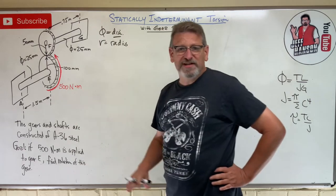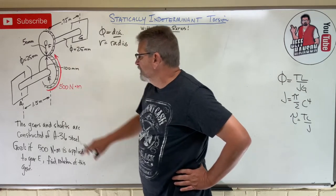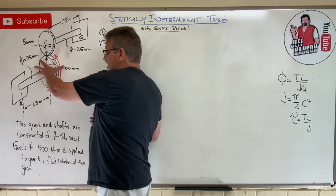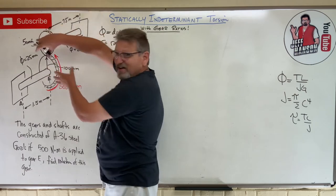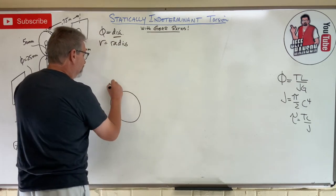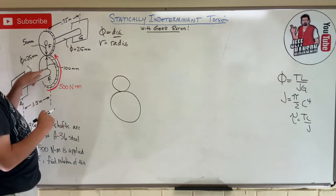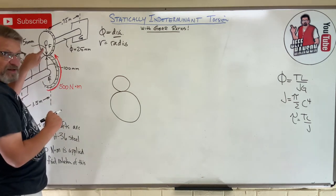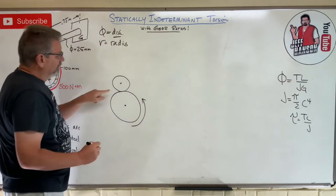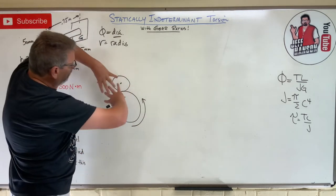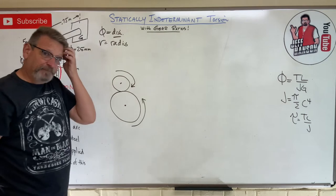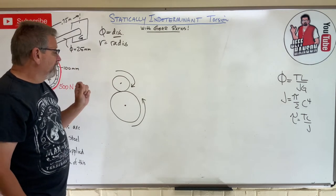Find the rotation of gear E, which is the big one on the bottom. First things first — do you agree that if this gear twists, since they're interlocked, that the other one has to twist in the opposite direction? Here's the big gear and the little gear: this one has a 100 mm radius, that one has a 50 mm radius. If this one rotates this way, the other one goes this way because those teeth are interlocked.